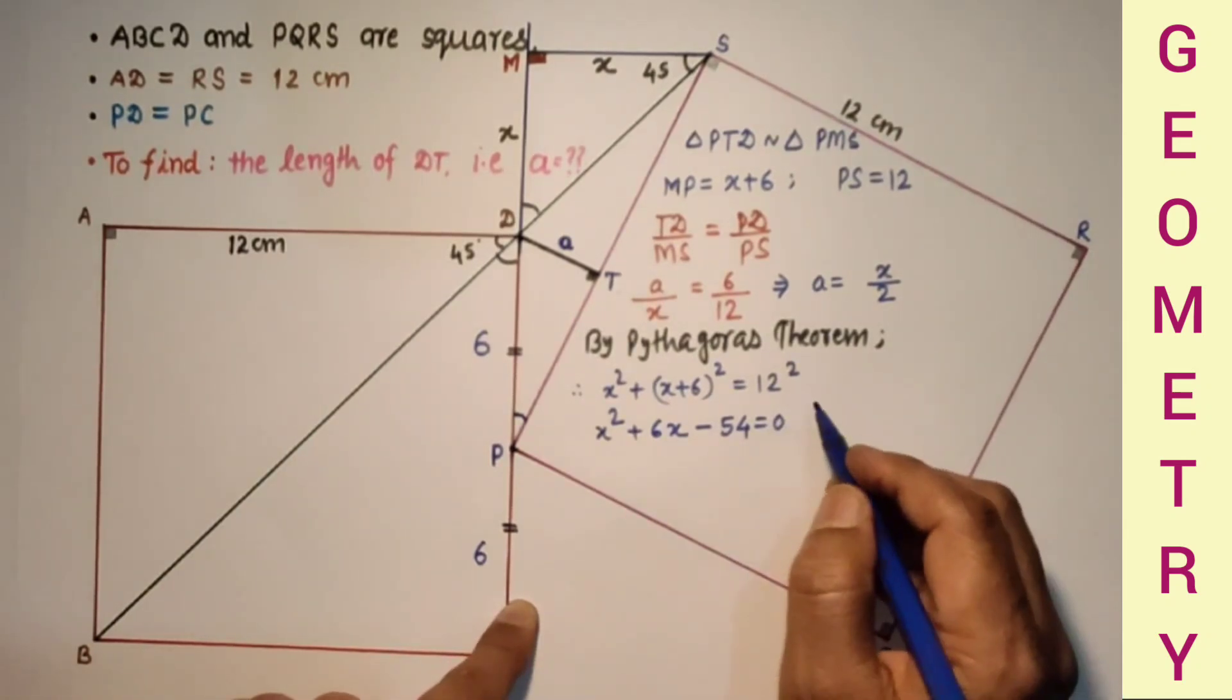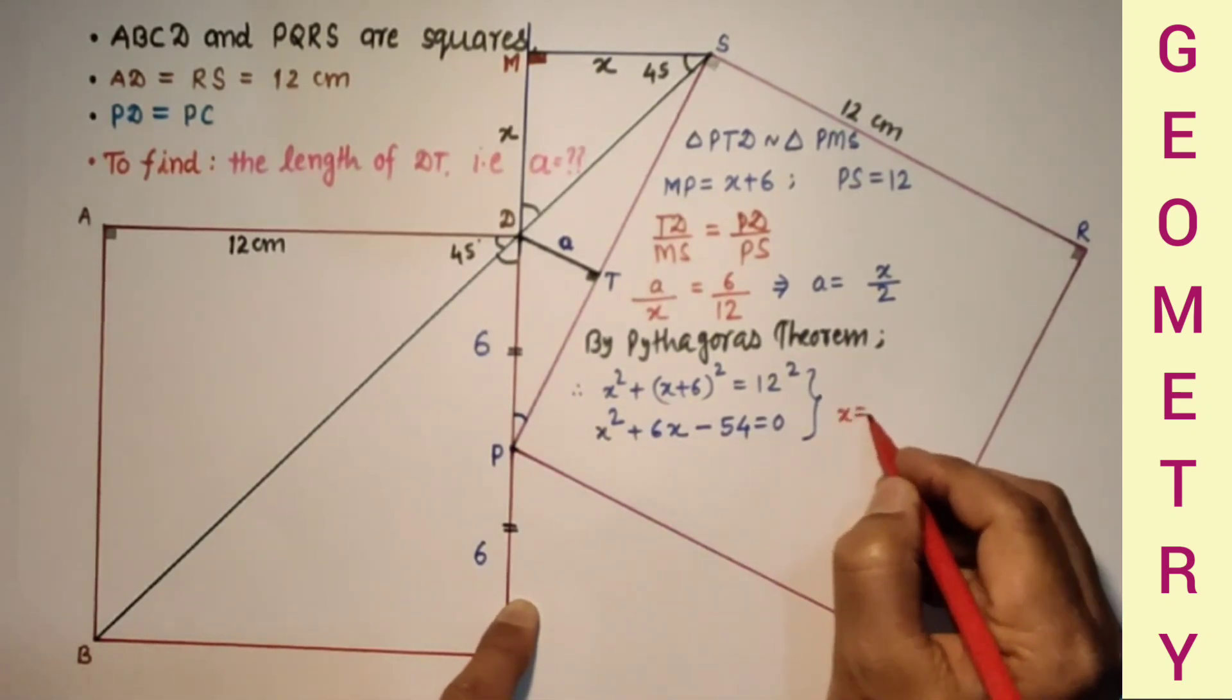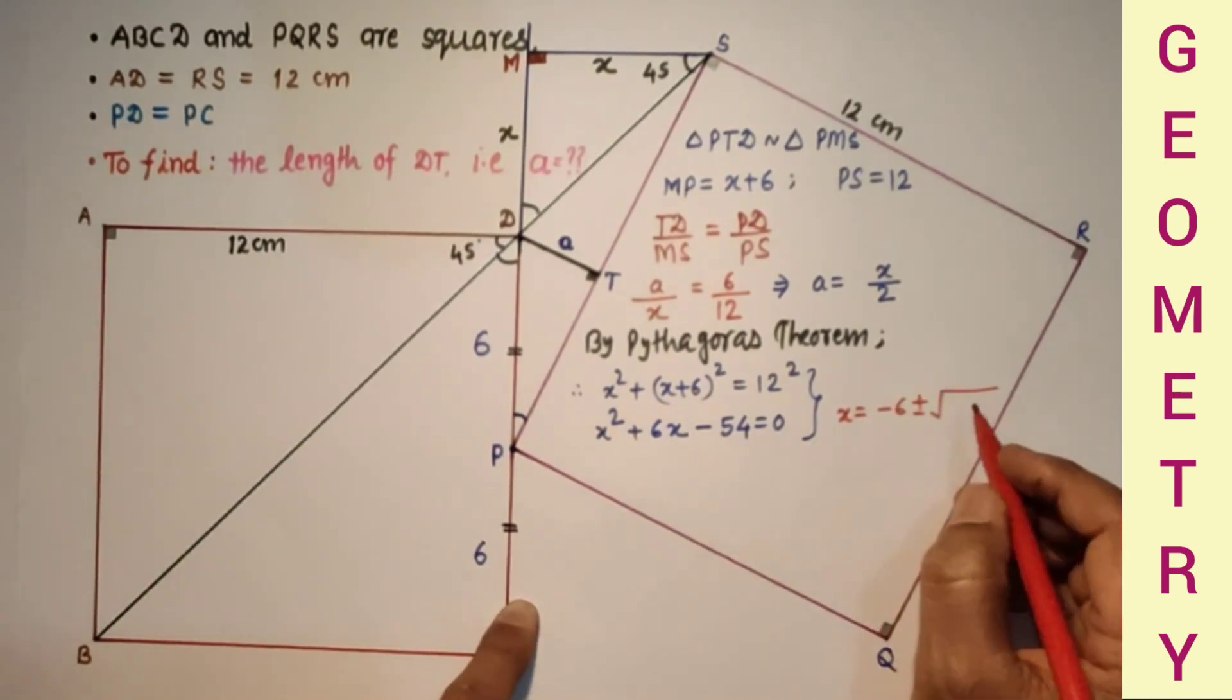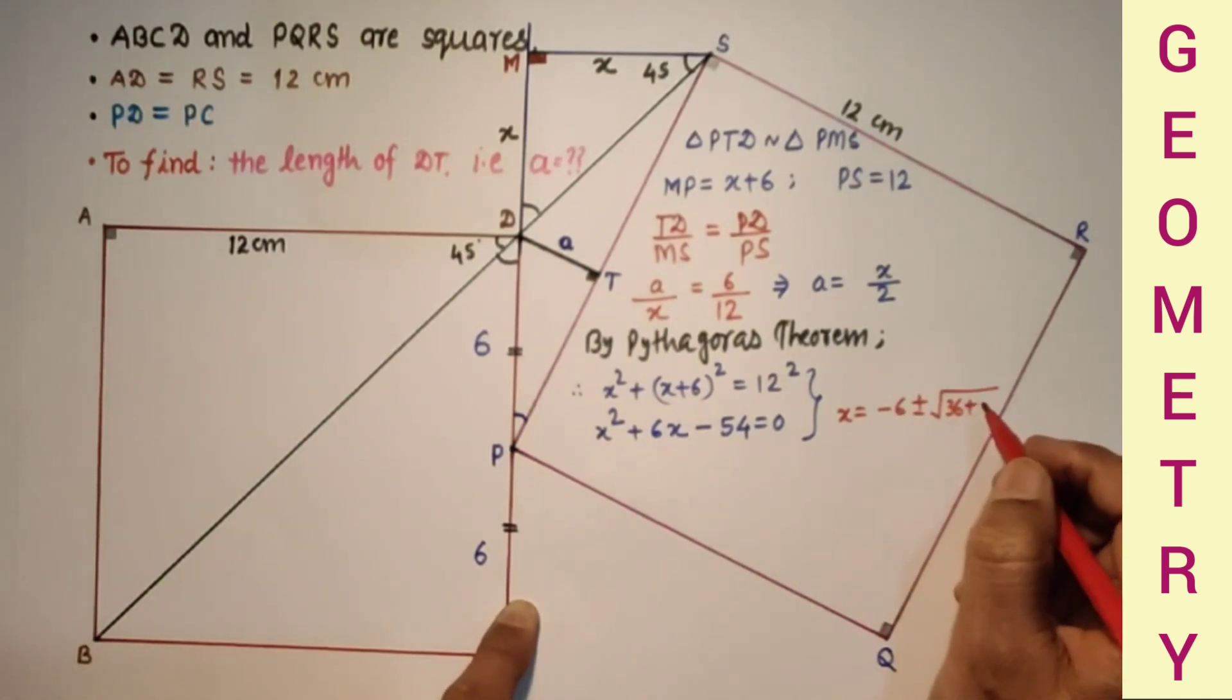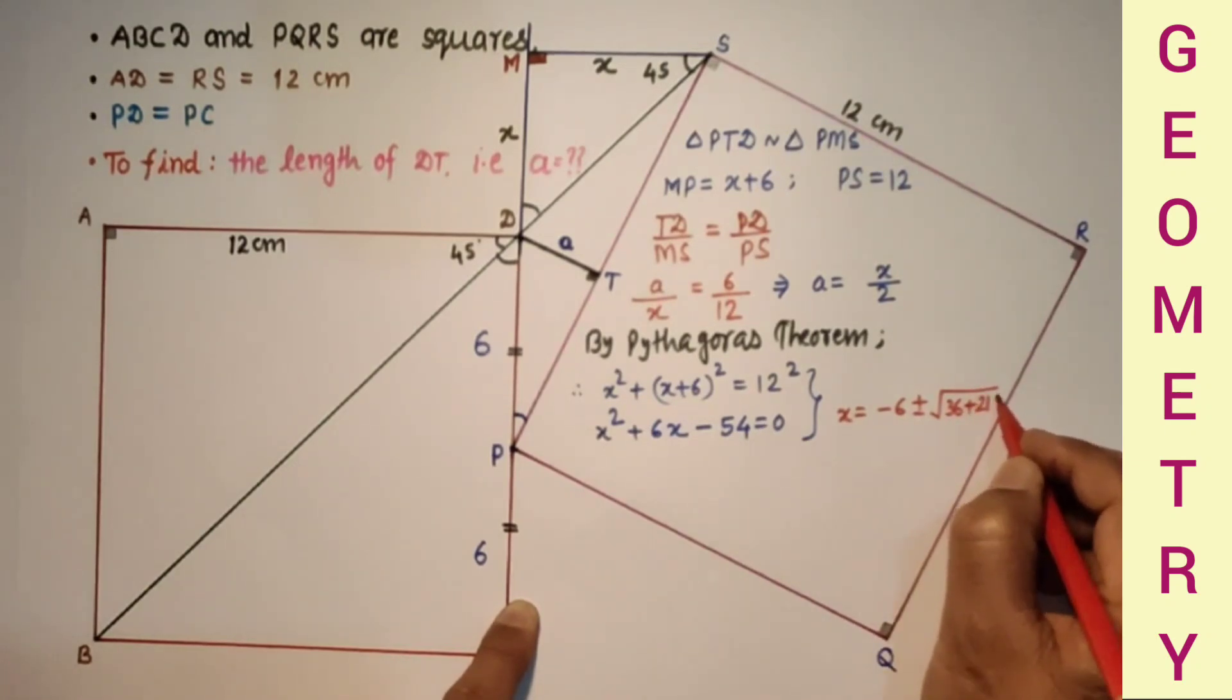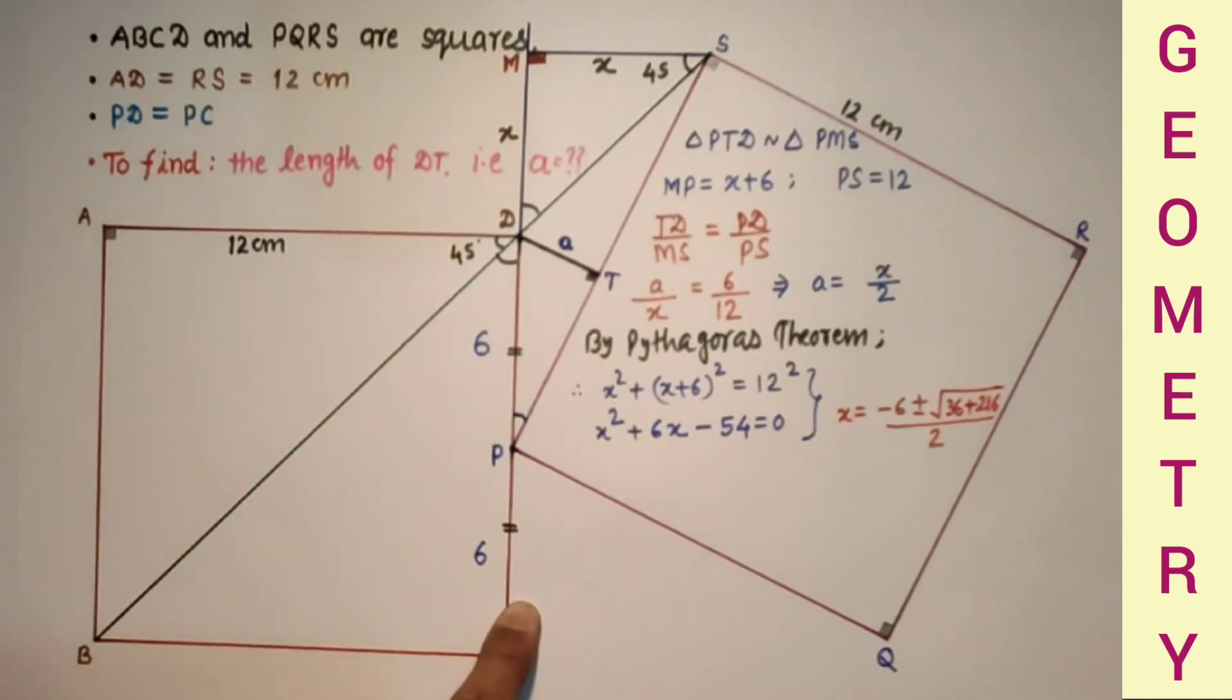We can find by using quadratic formula. X is equal to minus 6 plus minus square root of B square which is 6 square minus 4 into 1 into minus 54, which is 4 into 54, 216, by 2.